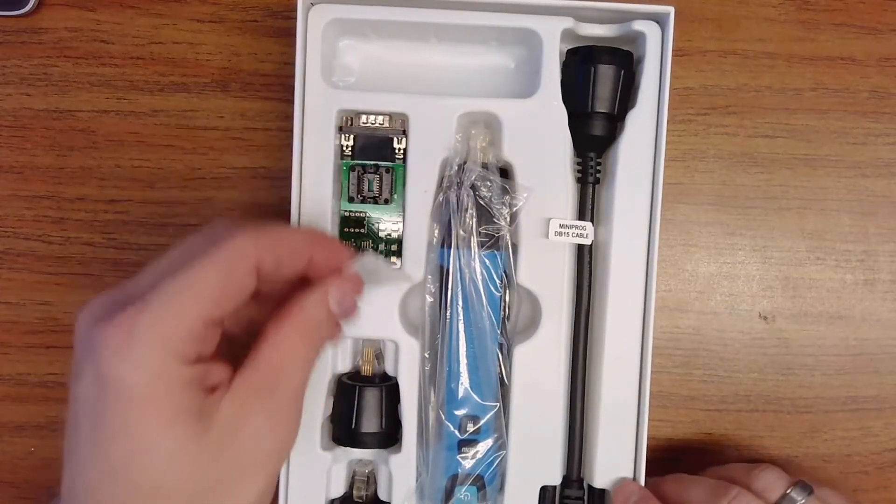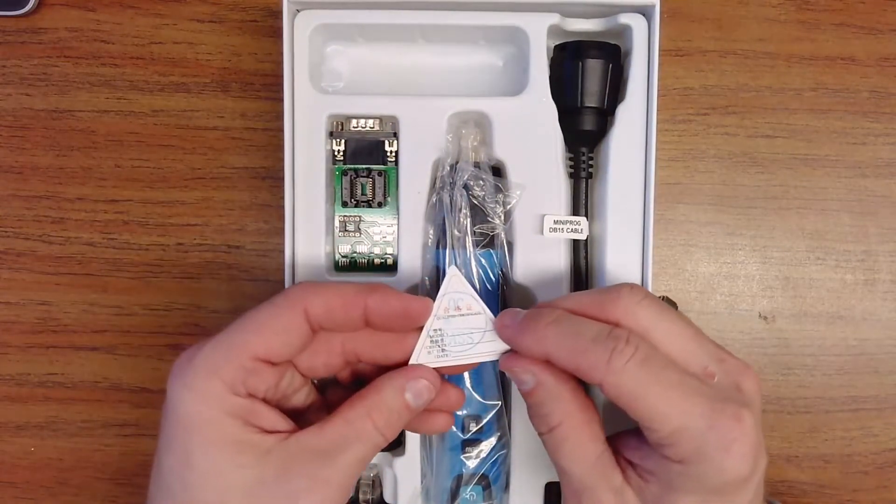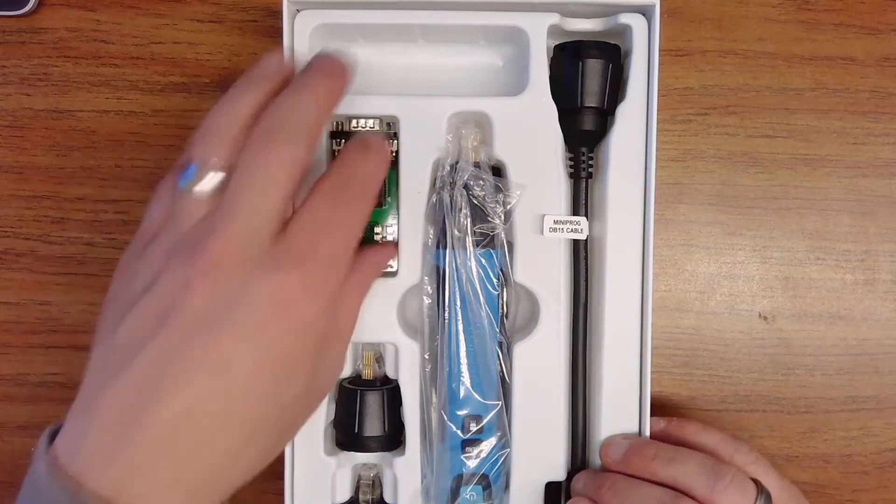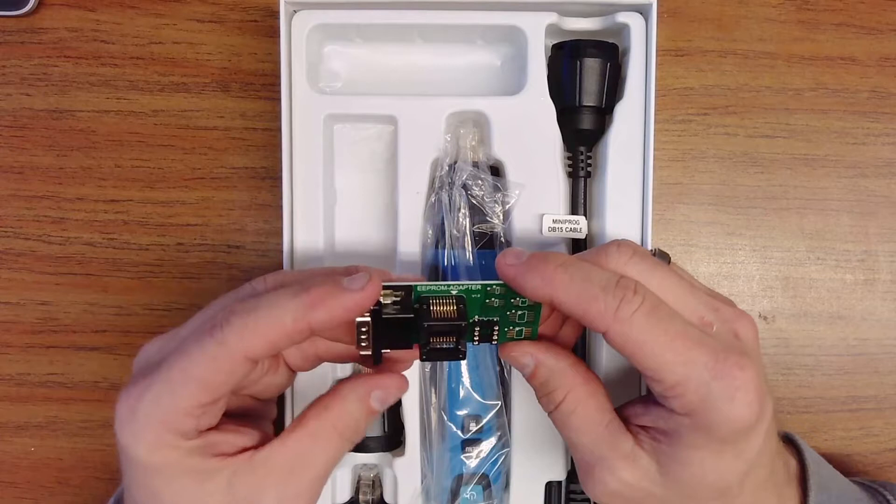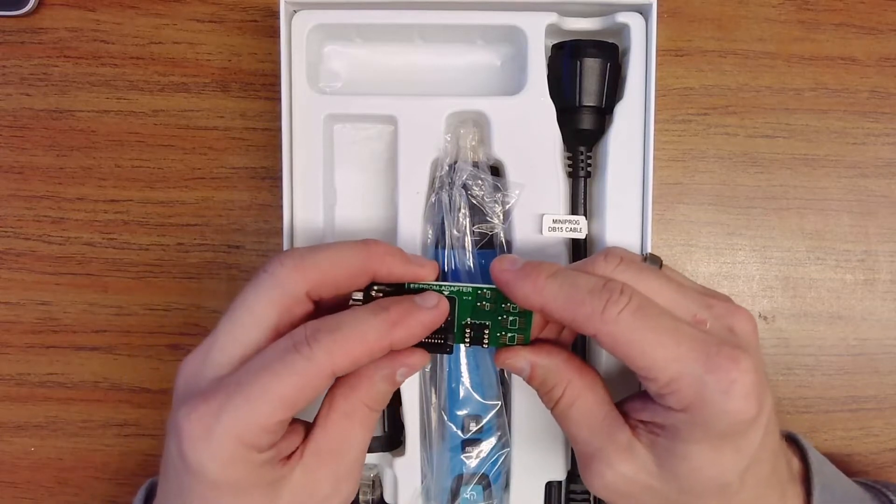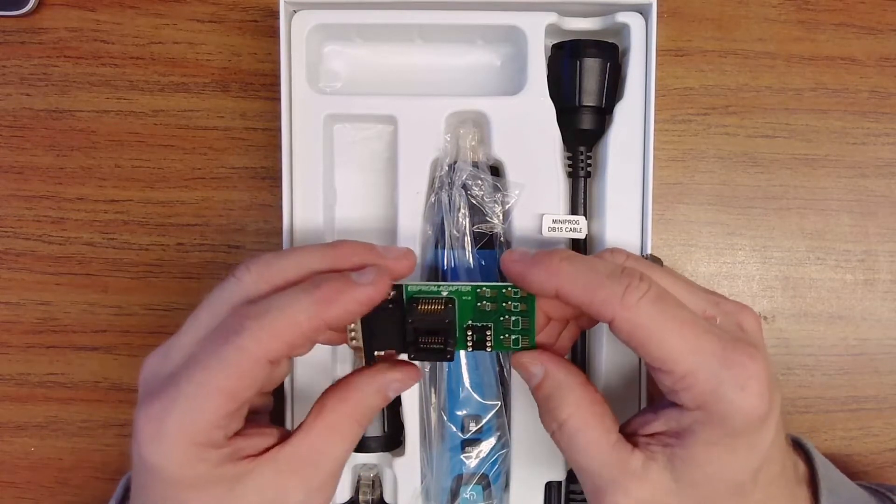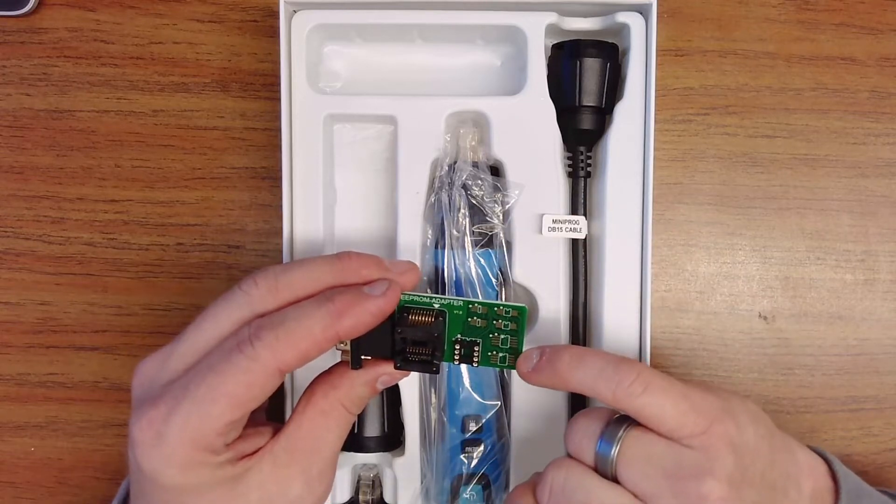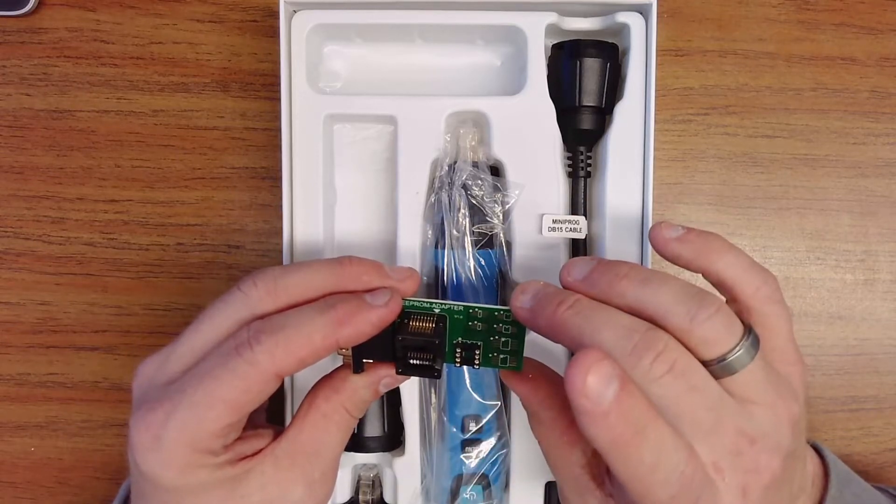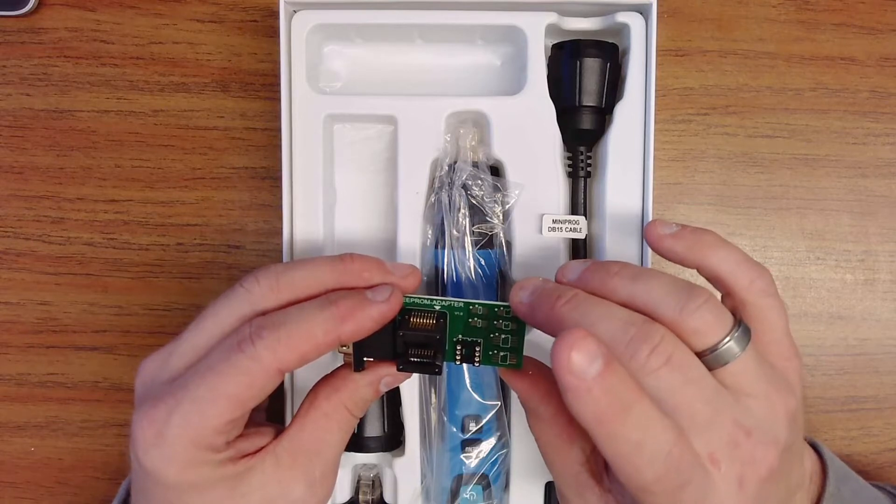Okay, looks like we have a quality control sticker. First thing I see here is an adapter. Looks like we have a socket here. And we also have some traces or some pads to solder on. Looks like SOIC8 and various other 6 and 8-leg memory devices. And it looks like it has an HD15 connector on the end.